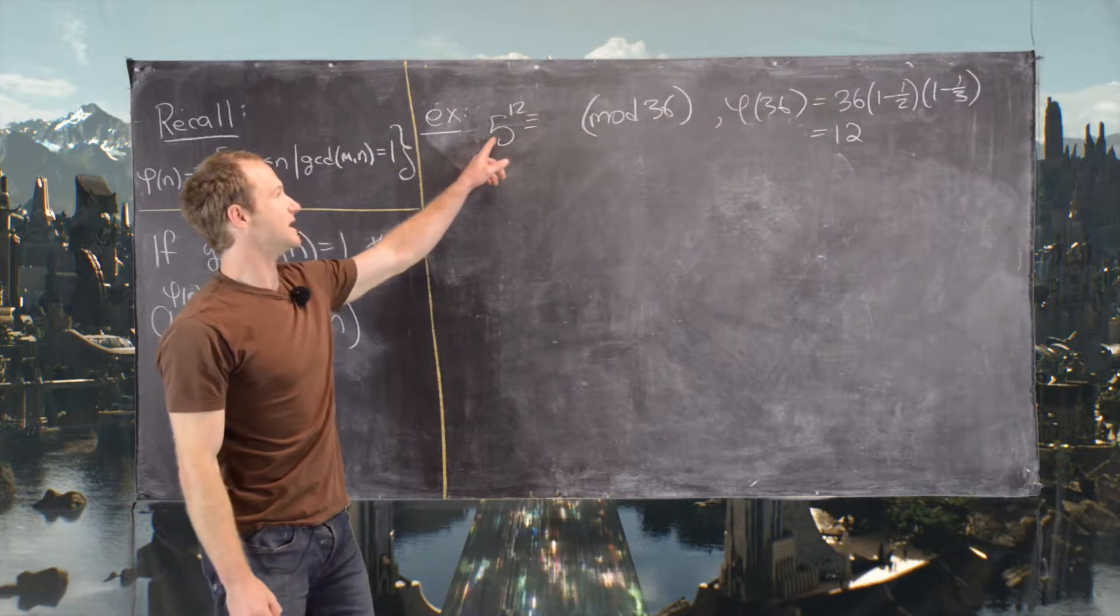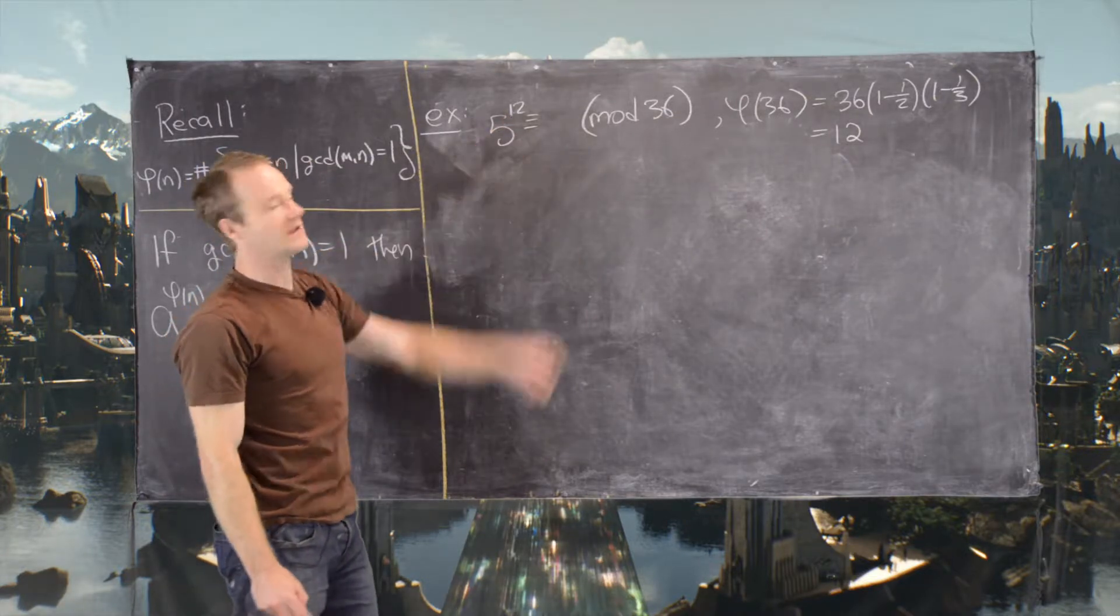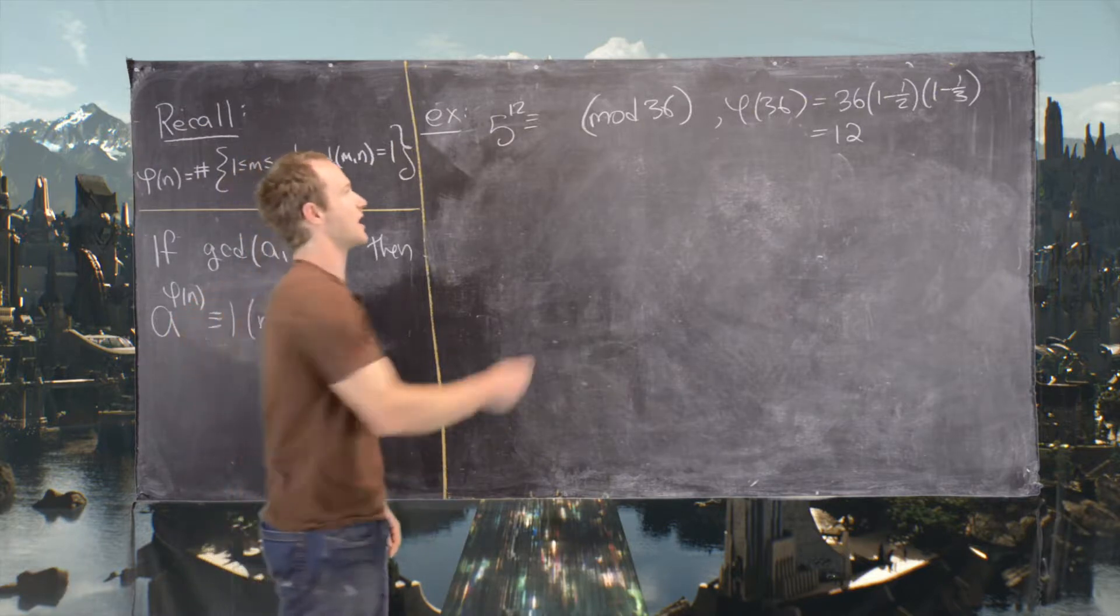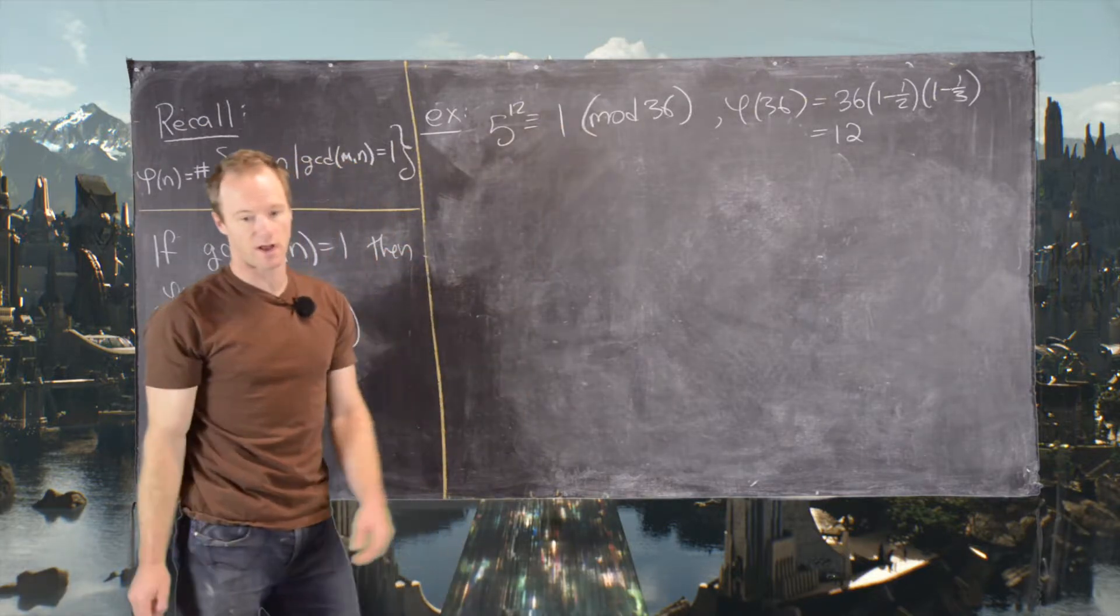So what we have here is 5 to the phi of 36, and 5 and 36 are relatively prime. So that gives us this is 1 immediately.